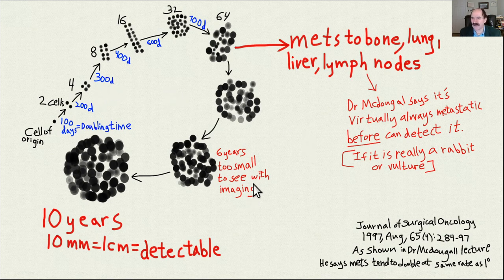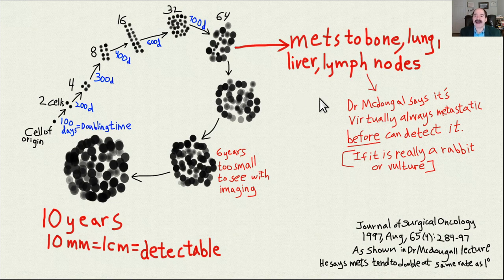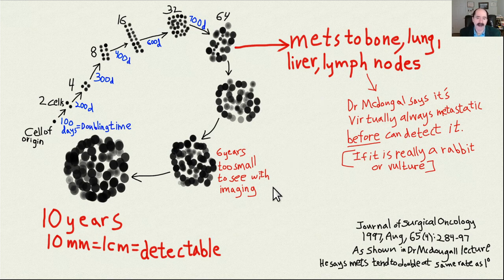By the time you can diagnose cancer, it's usually about a centimeter in diameter — 10 millimeters — and it's usually already metastatic before that point. Those are called micrometastases, meaning they're present but no one can see them, and it's usually the metastases that kill the patient in 90% or more of cases. So the real battle to survive cancer is to control metastatic disease, prevent it, and minimize its growth.